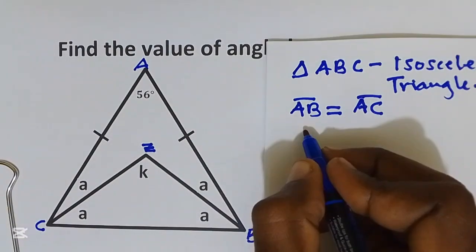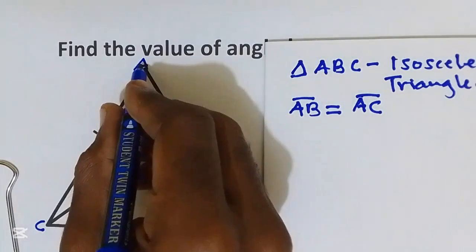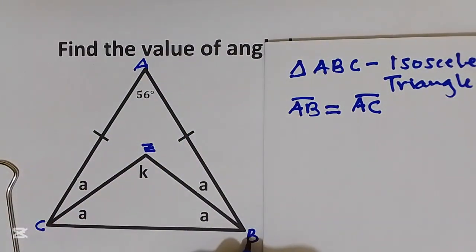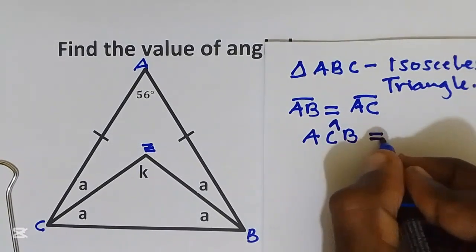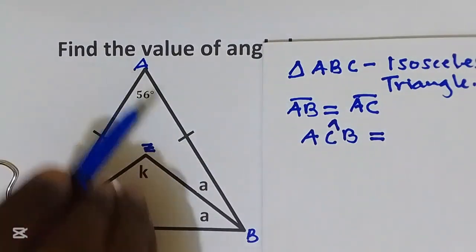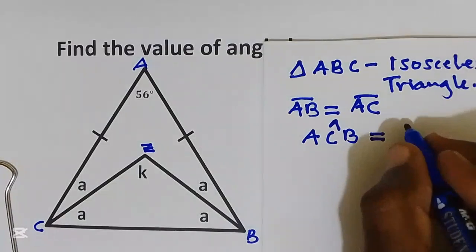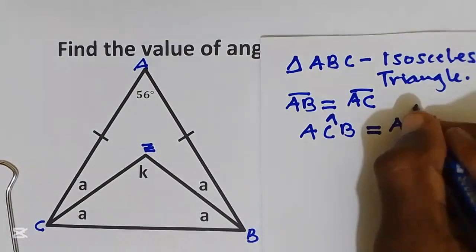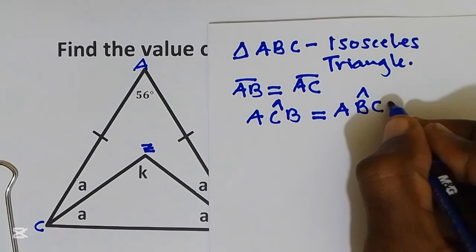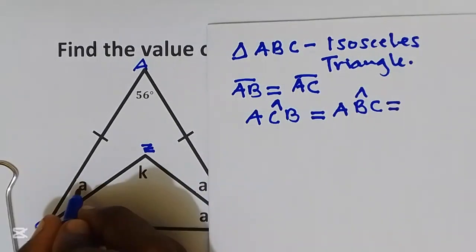Also, angle ACB is equal to angle ABC. This is equal to a plus a, which gives us 2a.